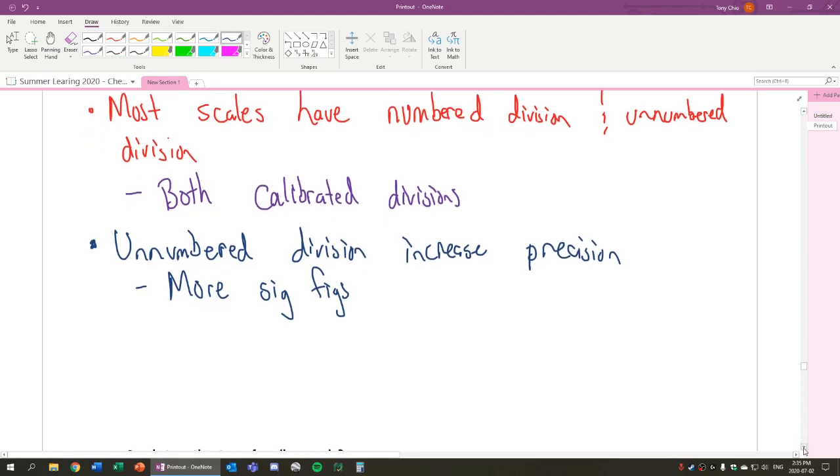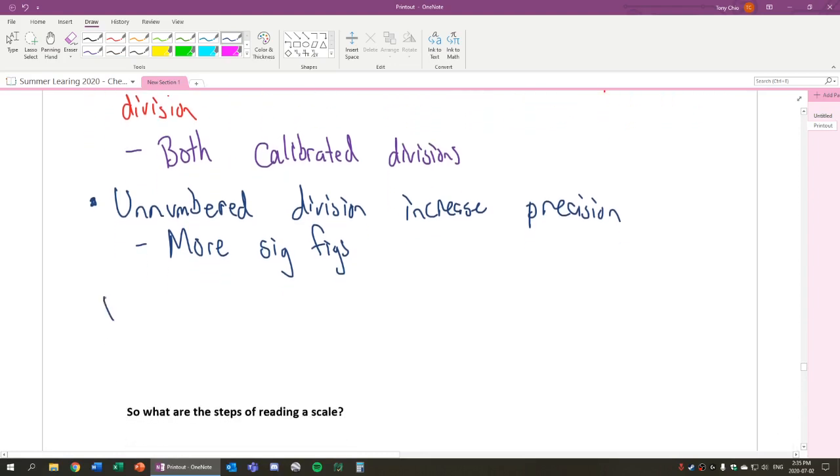Now how do we find the unnumbered division? What is the value? The value of the unnumbered division is found by this formula: it's the difference, the change, the difference in numbered division, divided by the number of subdivision, aka the number of lines.